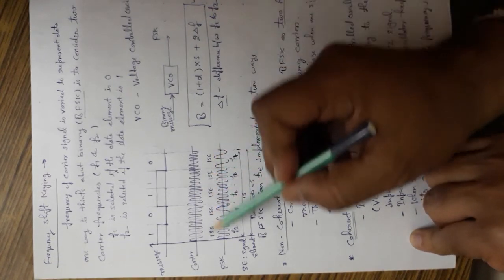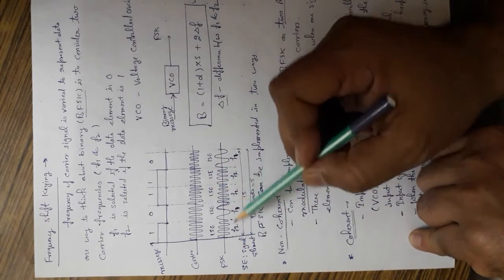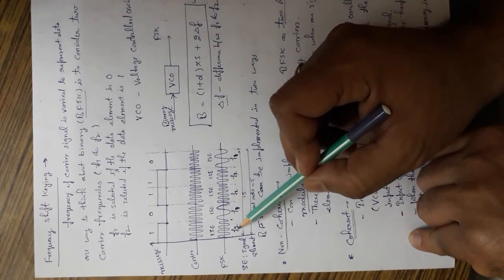If we look at the output of FSK, it is the combination of two frequencies F1 and F2.